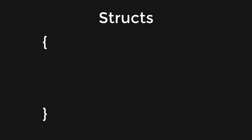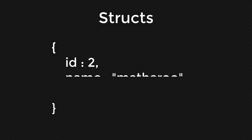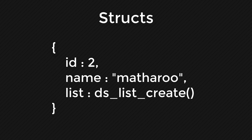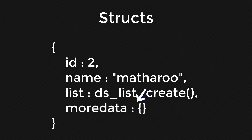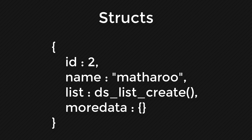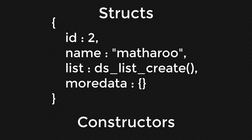To create a struct you use these brackets, and inside the struct you can create variables. You can then store that struct in a variable, pass it into a function, or do something else. Inside the struct you can create any kind of variables — a real, a string, a data structure, even a function — and you can also store a struct inside another struct. We also have constructors, which are basically templates for creating new structs, and we're going to look at both of these in this video.